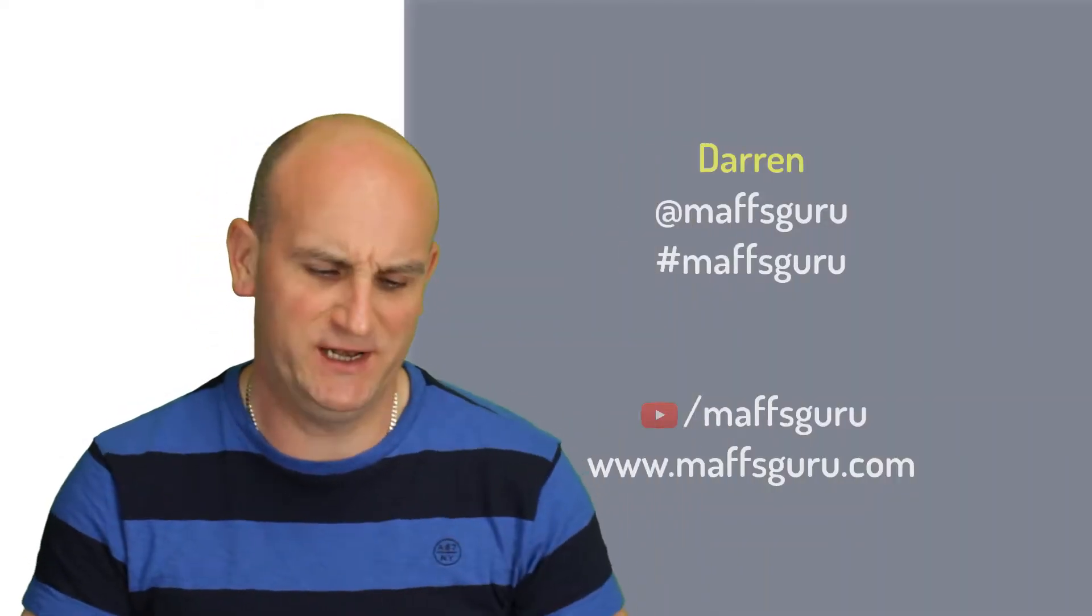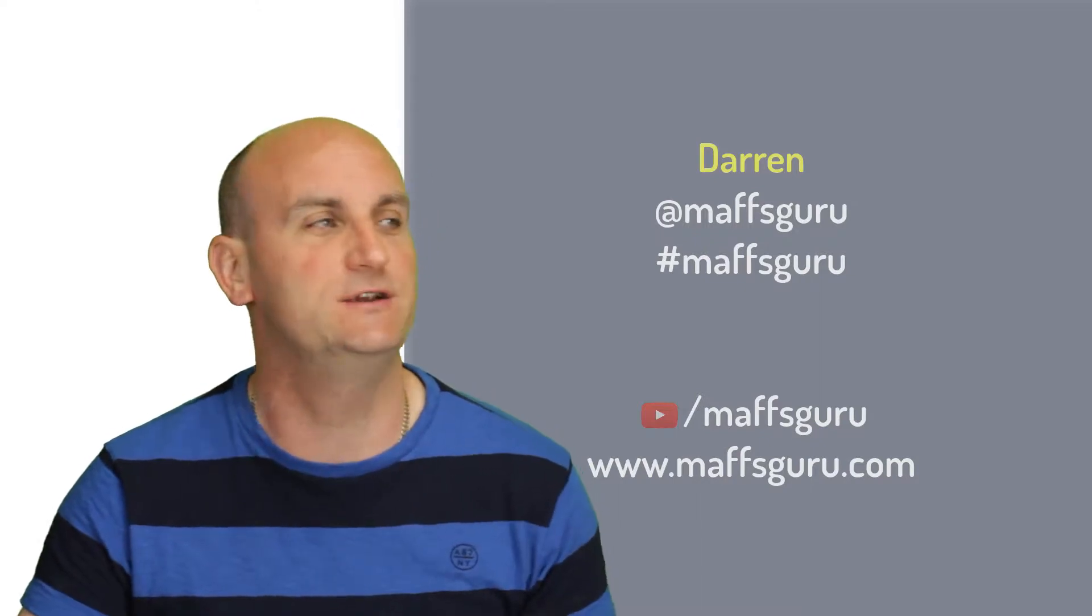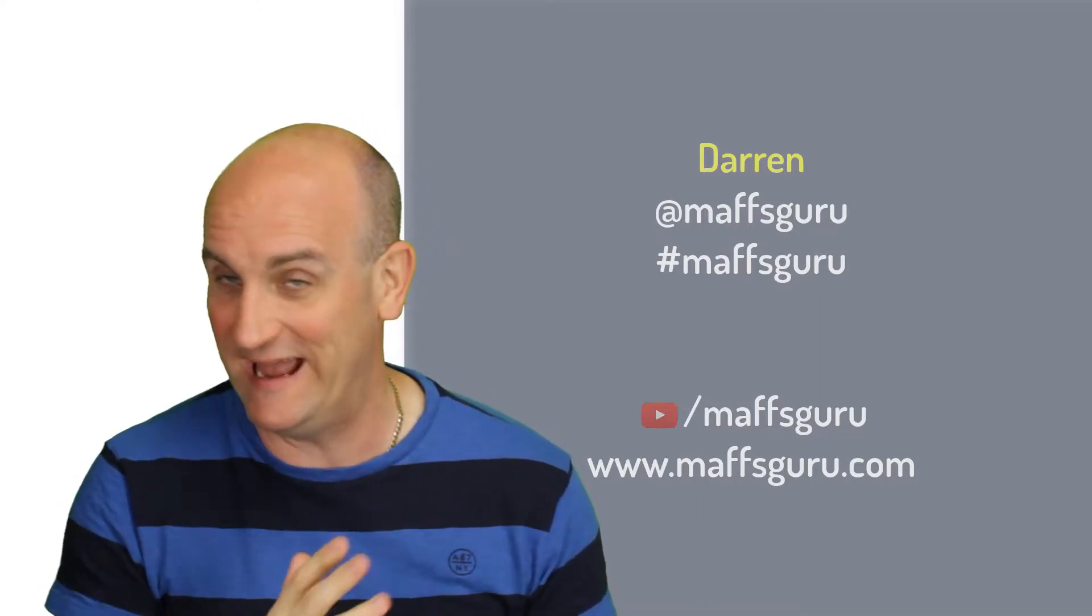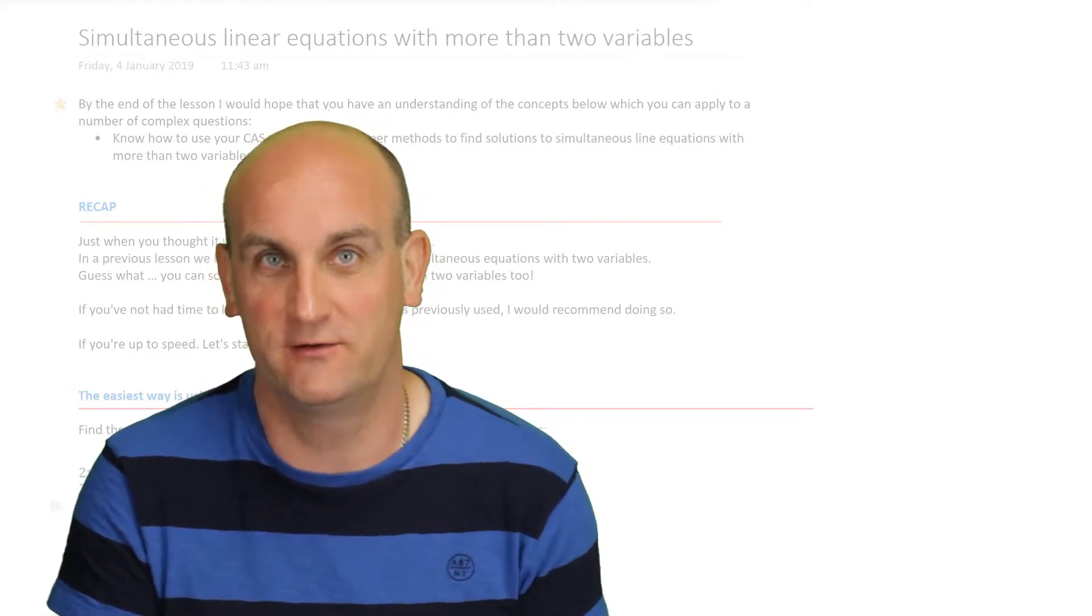Hi guys and welcome to Simultaneous Linear Equations with More Than Two Variables. Who would have thought? Simultaneous equations with more than two variables - x, y's and z's. What does this all mean? Thank you so much for taking the time and dropping by.